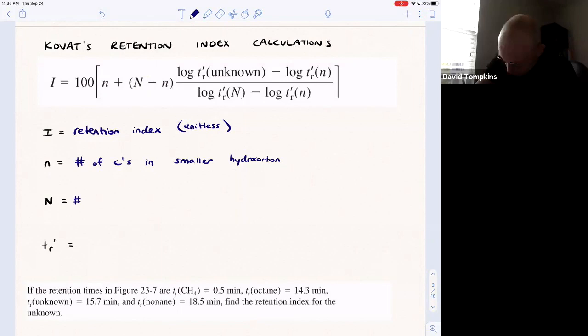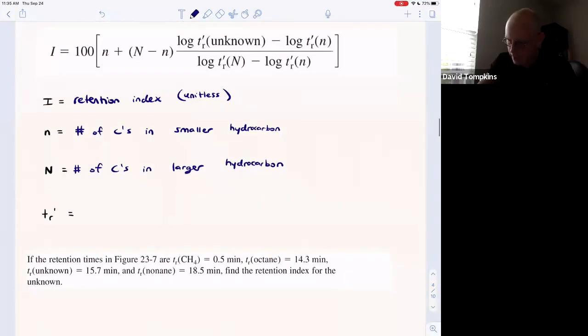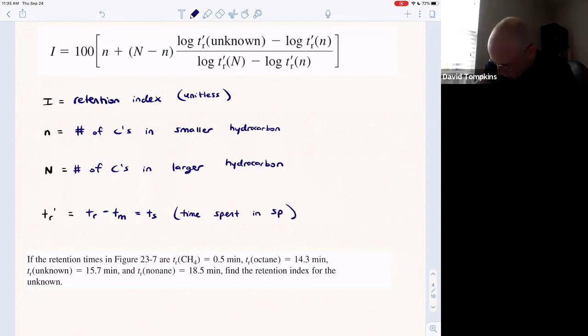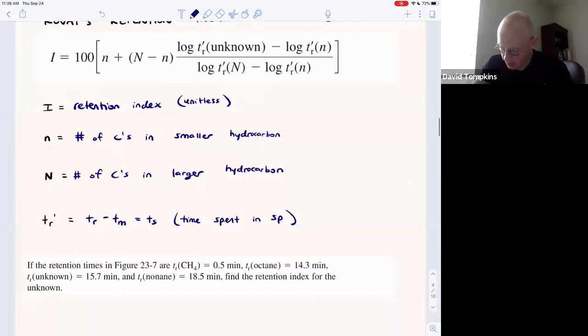We'll need the data from one other hydrocarbon as well to be able to find the unknown. Capital N is the number of carbons in the larger hydrocarbon. And then TR prime, this is the retention time minus the mobile phase time, or in other words, the stationary phase time.